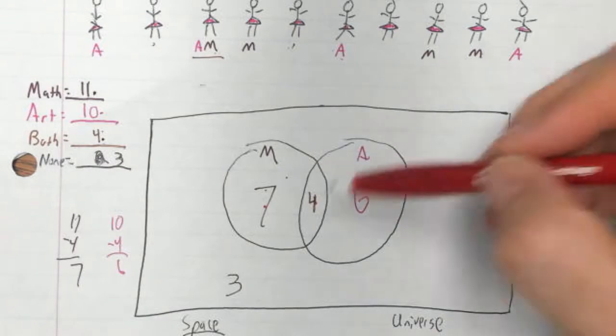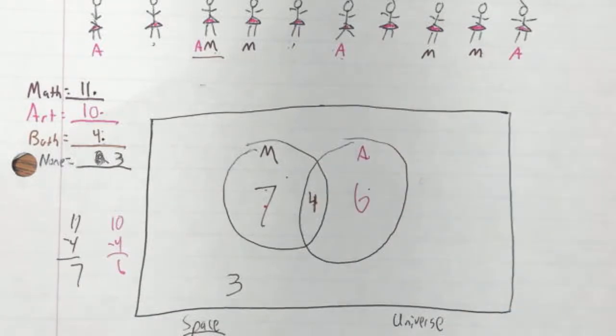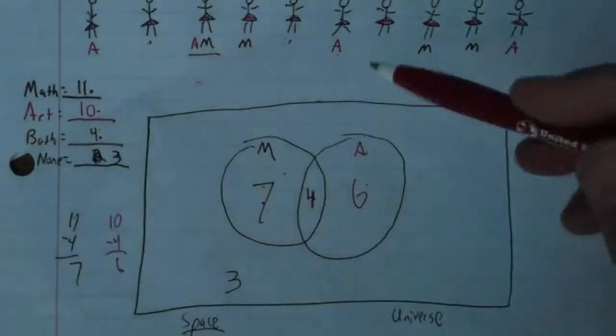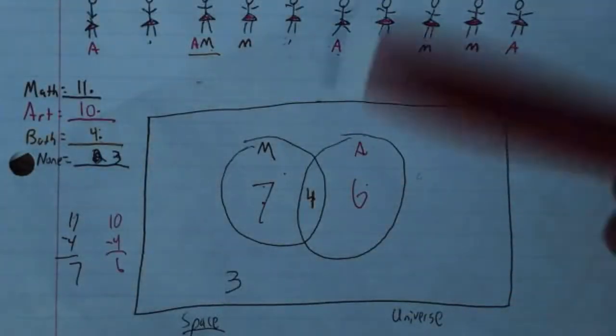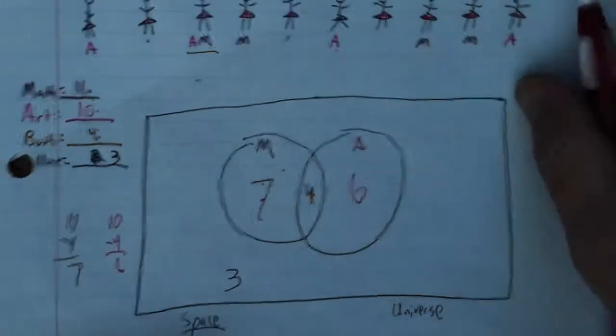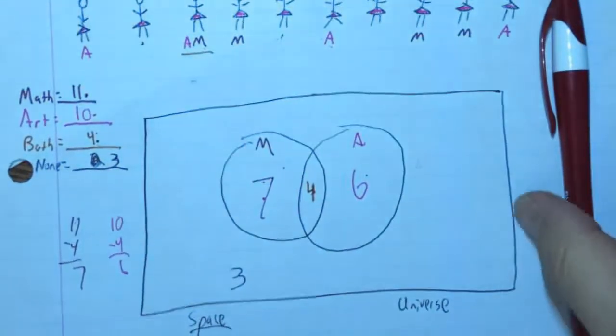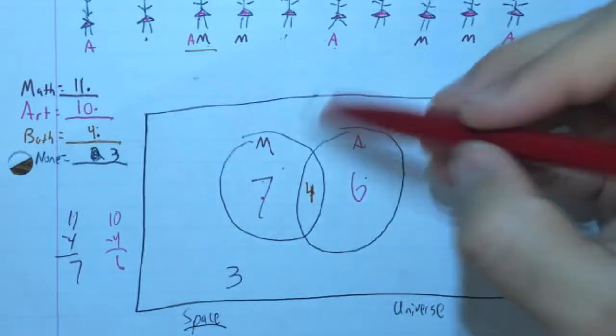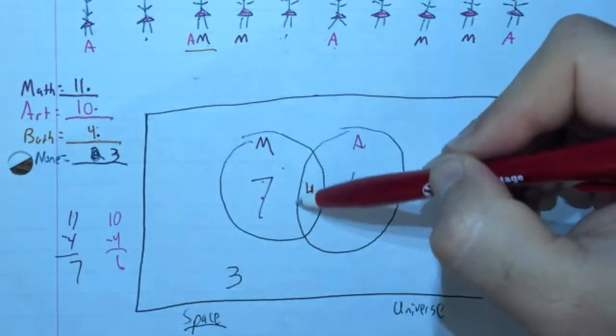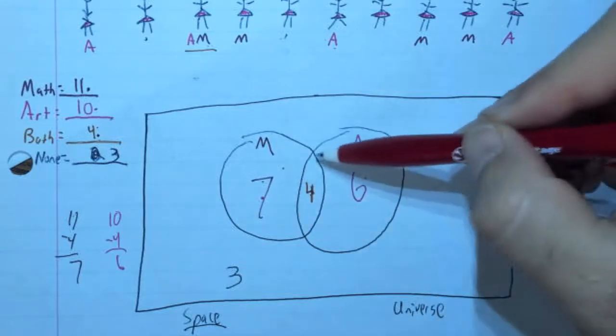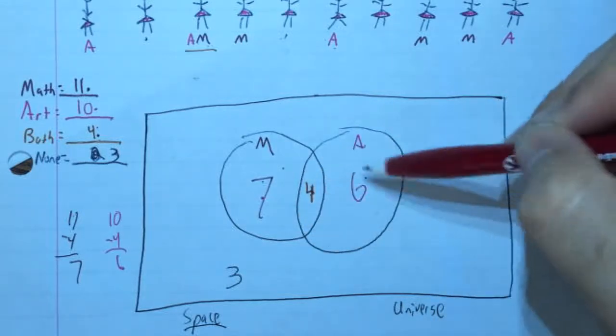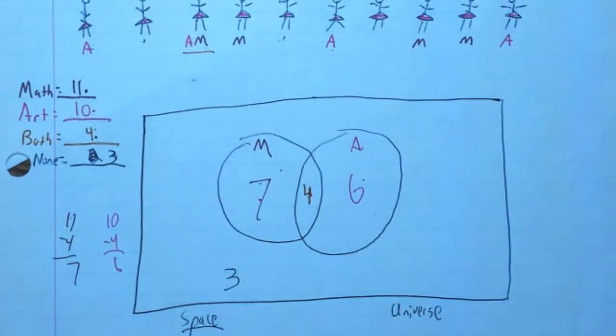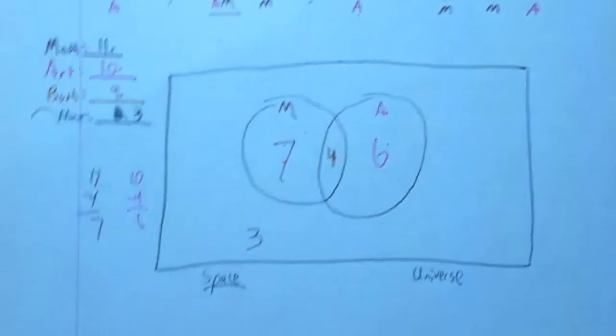Now whenever I start looking at these regions, this area on the outside, outside the circles, is people who didn't have anything. Inside of this region here is math only. Over here to the right is art only. In the middle we have both math and art. So now let's start doing probabilities based on this.